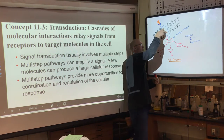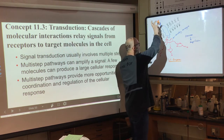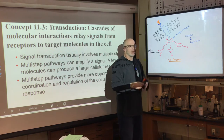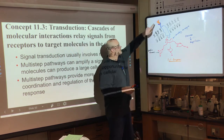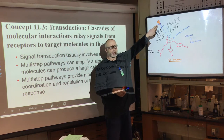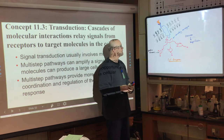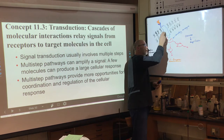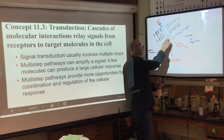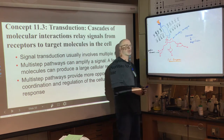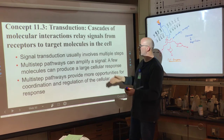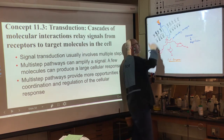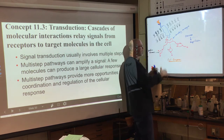Getting back to transduction: there's a cascade of interactions with relay signals. Once there's reception and transduction, there's a specific allosteric change — a chemical specifically binds to its receptor. The receptor isn't one that can receive any signal; it's specific. The three-dimensional structures have to fit together, causing a change that allows the transduction signal to pass through and activate the secondary messenger.